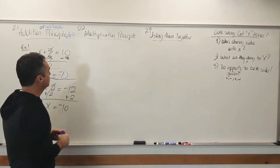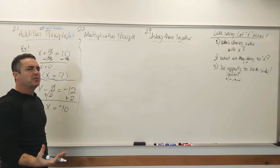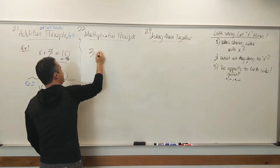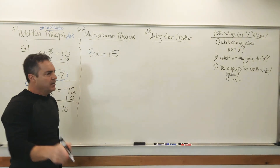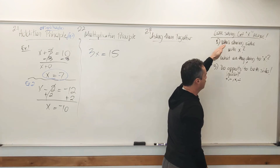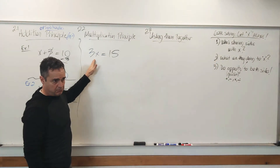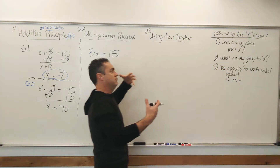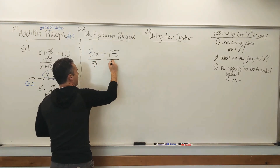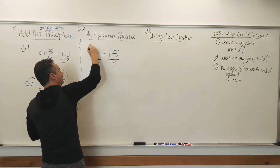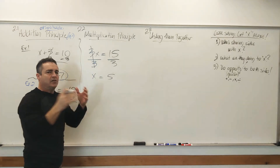Our next principle is the multiplication principle. If I have 3x equals 15, what does x equal? Five. Same principles apply. Who is sharing sides with our variable x? Three is. What is 3 doing to x? Multiplying. What's the opposite of multiplication? Division. So we're going to divide this side by 3 and divide this by 3. 3 divided by 3 is 1. 1 times x is just x. x is now alone. 15 divided by 3 is 5. What Kenny can do in his head, we can do with algebra.